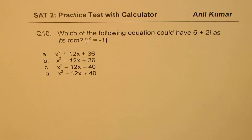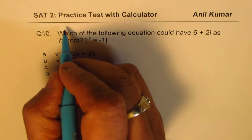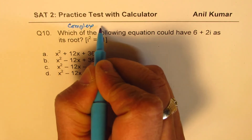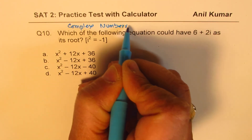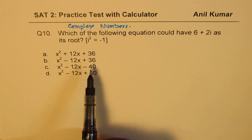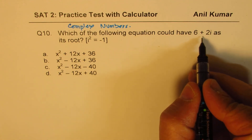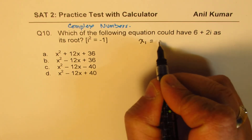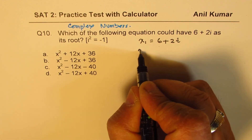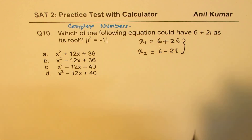Question 10: which equation could have 6 plus 2i as its root? We're given quadratic equations and are looking at complex numbers. Since complex roots always come in conjugate pairs, if one root is 6 plus 2i, the other root must be 6 minus 2i.